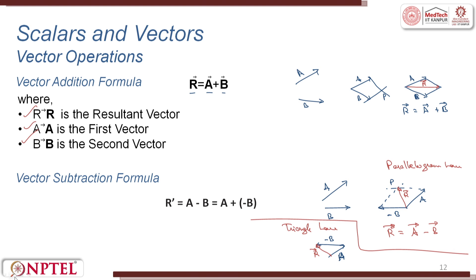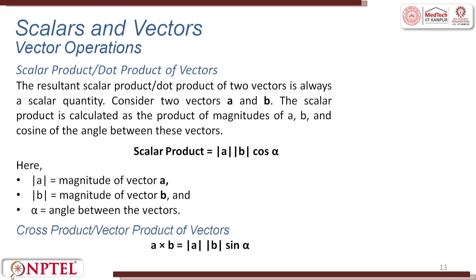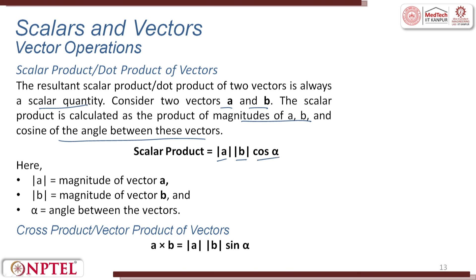The scalar (dot) product of vectors a and b equals |a||b|cos α, where α is the angle between them — the result is always a scalar. The cross product a × b equals |a||b|sin α, and the result is a vector quantity perpendicular to both a and b.